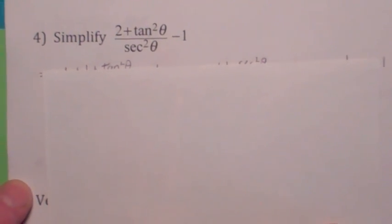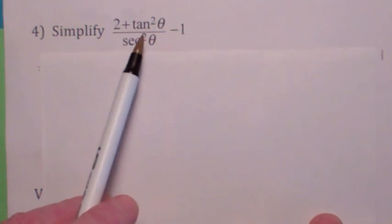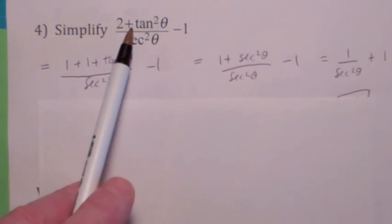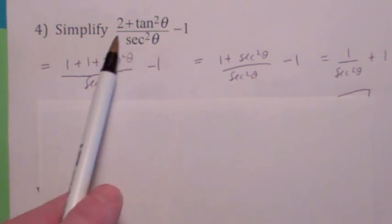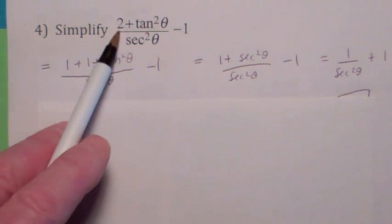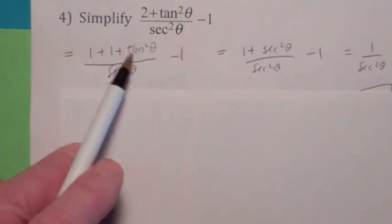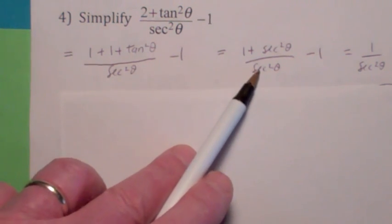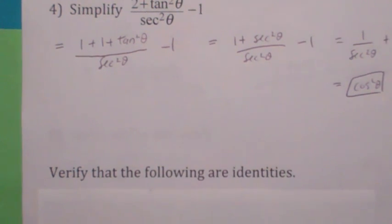Let's try another simplification. You could write everything in terms of sines and cosines, but instead try something fancier. Recall that tan squared plus 1 equals secant squared. Break up 2 as 1 plus 1, then replace 1 plus tan squared with secant squared. Breaking this into two fractions gives 1 over secant squared plus 1. The ones cancel, leaving 1 over secant squared, which equals cosine squared.